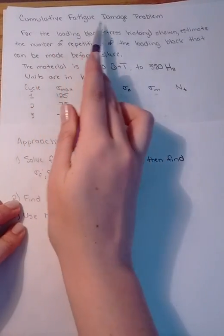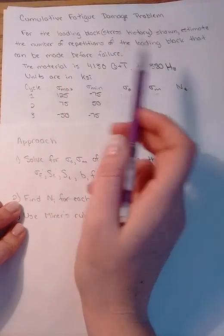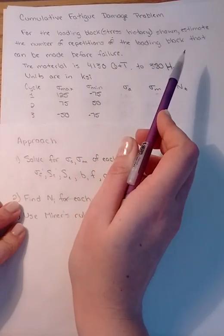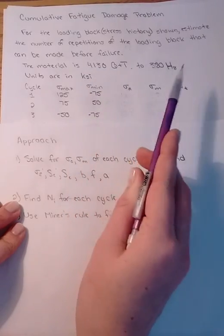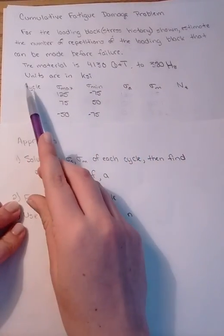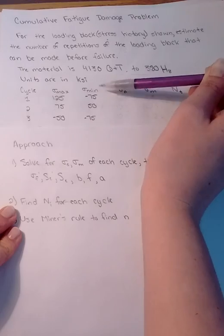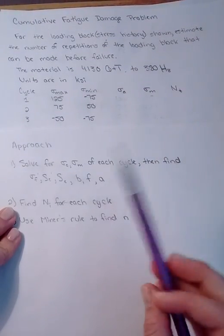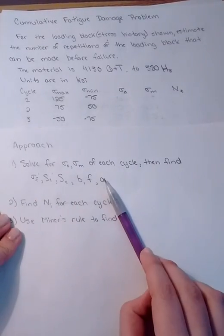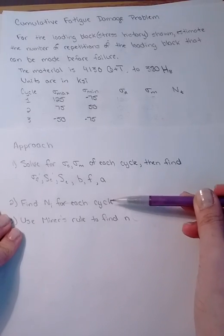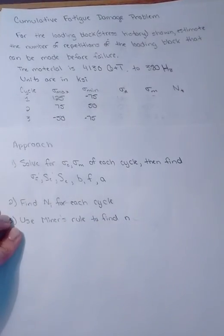The problem is a cumulative fatigue damage problem. The problem statement says that for the loading block stress history shown, estimate the number of repetitions of the loading block that can be made before failure. The material is 4130 quenched and tempered to 380 Brinell hardness, with units in KSI. We are given three cycles with sigma max and sigma min for each. The approach is to first solve for sigma average and mean for each cycle, find all constants, break them down for the three cycles, solve for capital N sub i for each, and then use Miner's Rule to find n.